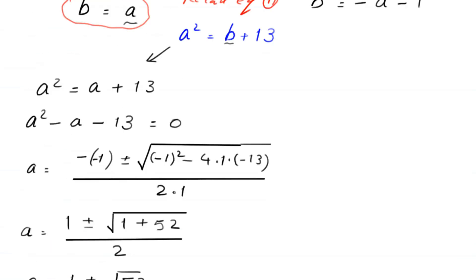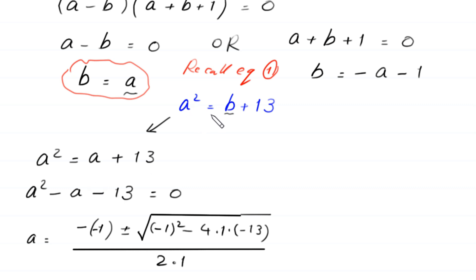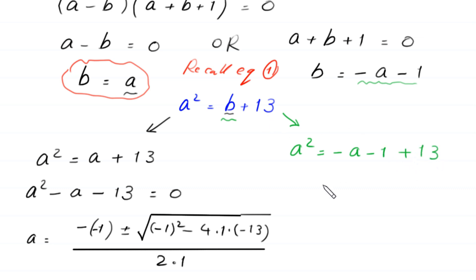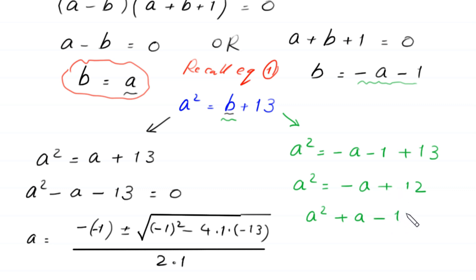Now in equation 1, a squared equals b plus 13, we replace b with negative a minus 1. This gives a squared equals negative a minus 1 plus 13, which simplifies to a squared equals negative a plus 12. Moving negative a and plus 12 to the left side: a squared plus a minus 12 equals 0. This quadratic is factorable, so we solve it by factorization.